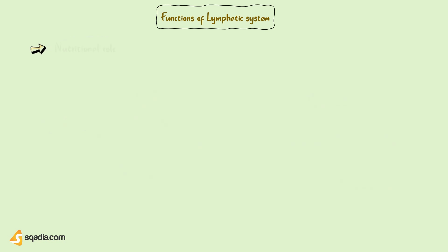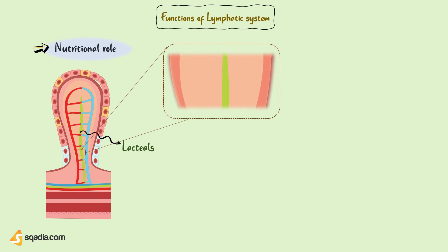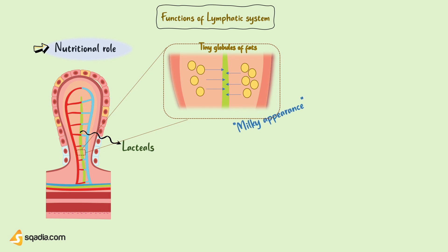Next comes the nutritional role, where intestinal lymph vessels called lacteals mainly play their role. These are tiny lymph vessels that take up and transport tiny globules of digested fat that have been absorbed by the mucosa from digested food, transporting them toward the venous circulation. The name lacteal comes from the appearance of the lymph, which resembles milk because of its fatty, milky appearance.